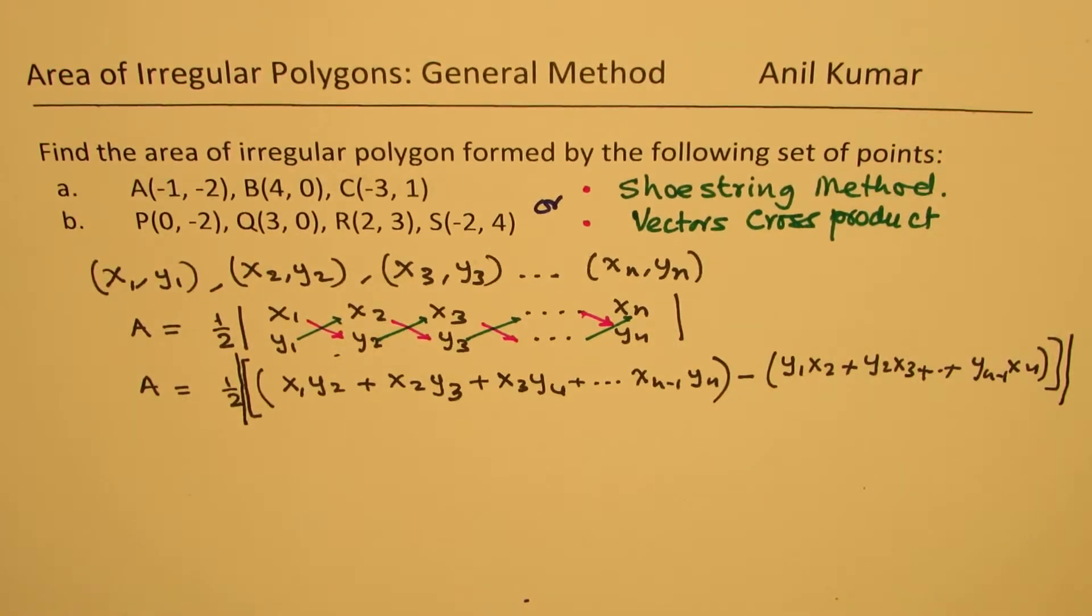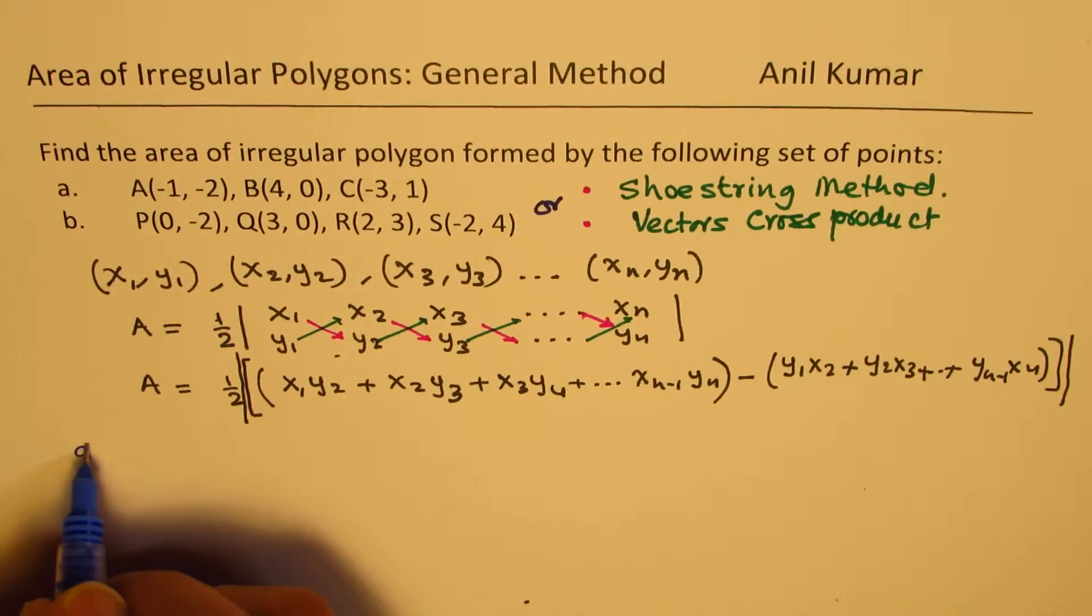We have to take the absolute value of this. That is the method to find the area. Now, with the help of these coordinate points, let me show you how to calculate this area.